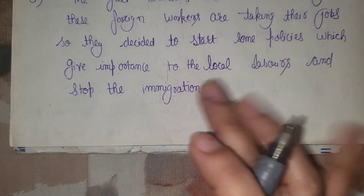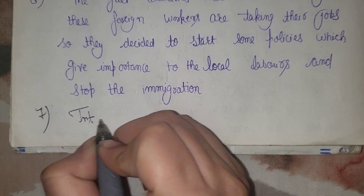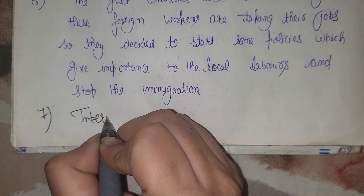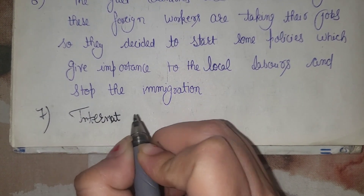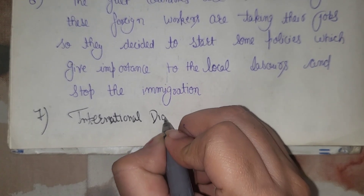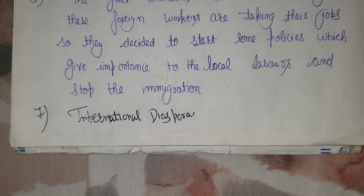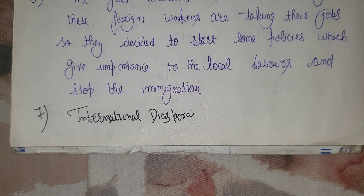One more point to mention is international disturbance. It is not necessary that India and the host country have direct problems — any international disturbance affecting that country impacts the diaspora there. For example, when a war-like situation happened in Ukraine, Indians were there, and India conducted an operation to evacuate them. So international-level disturbances also impact the diaspora's safety and protection.